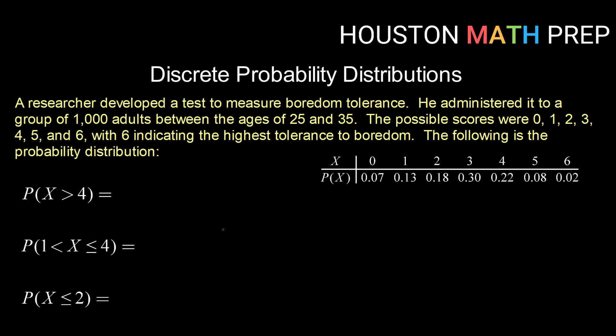Now the first thing we should do is verify that this is a valid distribution. We do that by checking that our two conditions are met. We check that each individual probability is between 0 and 1. A quick look at each one - they are all decimals between 0 and 1. So our first condition is met.